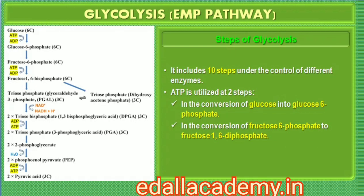In glycolysis, a chain of 10 reactions under the control of different enzymes takes place to produce pyruvate from glucose. Please note the steps at which utilization or synthesis of ATP, or in this case NADH and H+, take place. ATP is utilized at two steps: first in the conversion of glucose into glucose 6-phosphate, and second in the conversion of fructose 6-phosphate to fructose 1,6-bisphosphate.